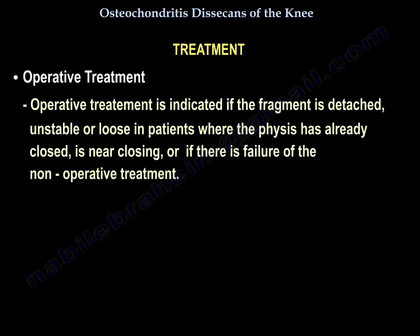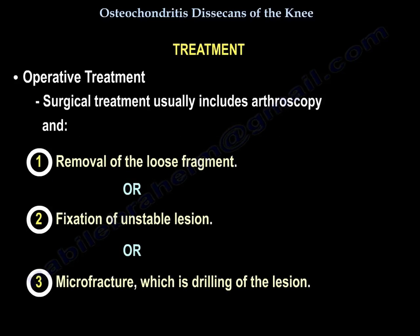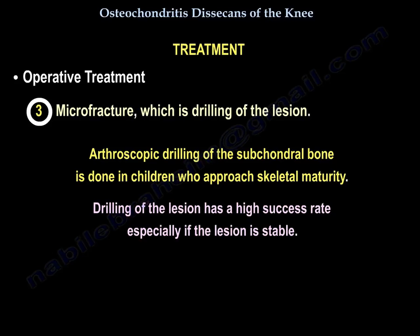Operative treatment is indicated if the fragment is detached, unstable, or loose in patients where the physis has already closed, is near closing, or if there is a failure of non-operative treatment. Surgical treatment usually includes arthroscopy with removal of the loose fragment, fixation of the unstable lesion, or microfracture — which involves drilling of the lesion. Arthroscopic drilling of the subchondral bone is done in children approaching skeletal maturity and has a high success rate, especially if the lesion is small and stable.